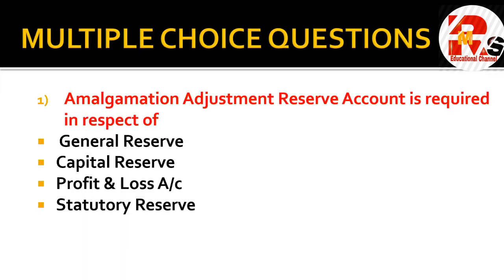Let's start with the first question. The amalgamation adjustment reserve account is required in respect of which type of reserve in the amalgamation chapter? The right answer for this question is statutory reserve — not project reserve, export profit reserve, or investment allowance reserve.